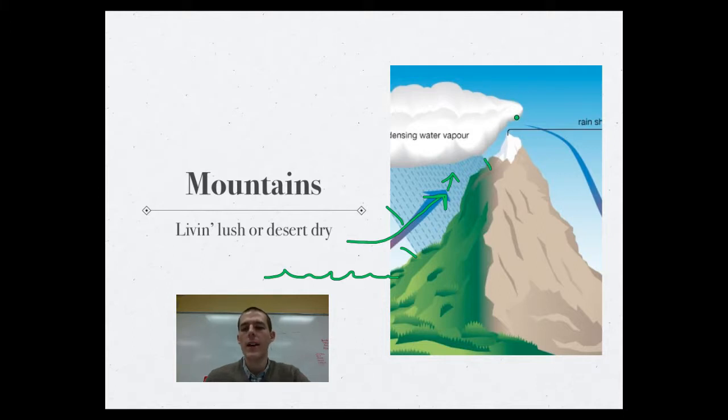After it's dropped its rain, it can go over to the other side of the mountains and it cruises down the other side. And what you get is one side of the mountains is super lush because all the rain has been dropped over here. And then the air that flows down the other side is super dry. So you'll have one side of your mountain range being super green, super lush, and the other side being desert dry. And that is the rain shadow effect.